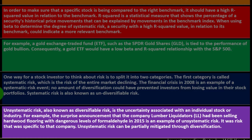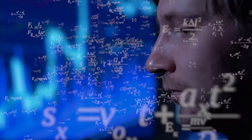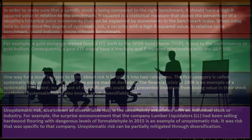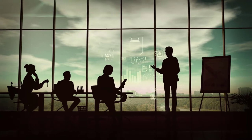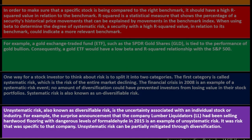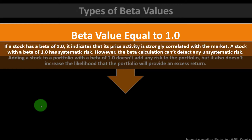Unsystematic risk, also known as diversifiable risk, is the uncertainty associated with an individual stock or industry. Within the market, even during normal times, some sectors and companies go up while others go down — that's when diversification can really help hedge against a downturn in any particular area. For example, the surprise announcement that Lumber Liquidators (LL) had been selling hardwood flooring with dangerous levels of formaldehyde in 2015 is an example of unsystematic risk. Unsystematic risk can be particularly mitigated through diversification.